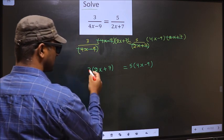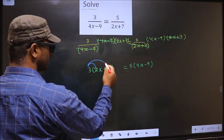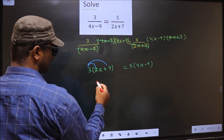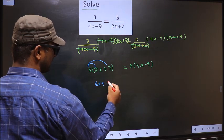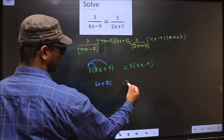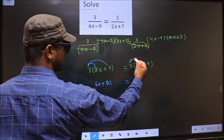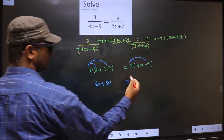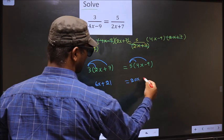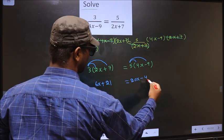Now let us open up the brackets in this way: 3 into 2x is 6x plus 3 into 7 is 21. Here also open up the brackets. So 5 into 4x is 20x minus 5 into 9 is 45.